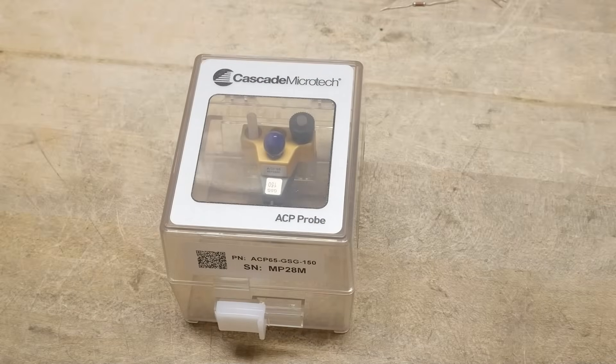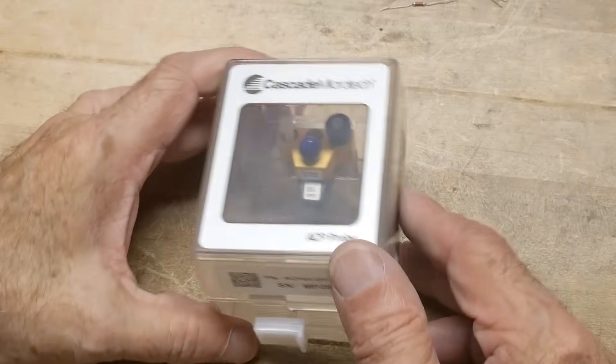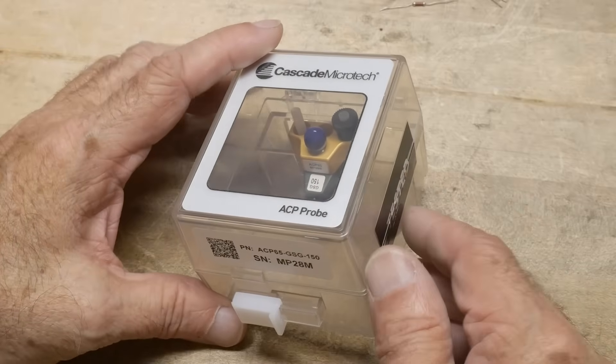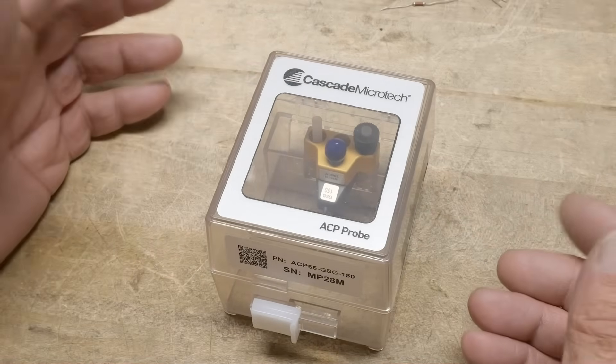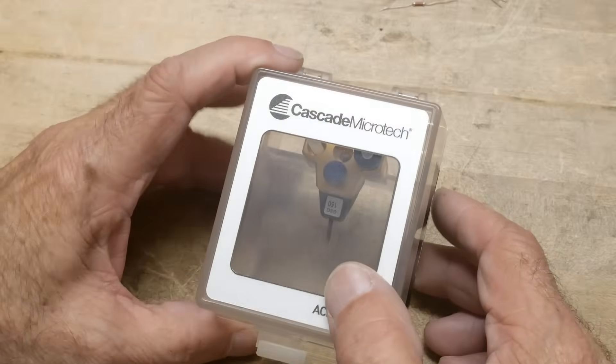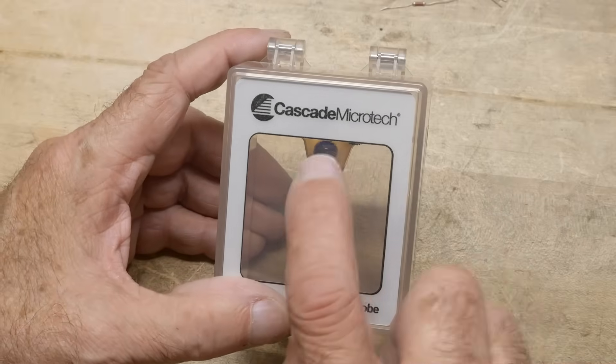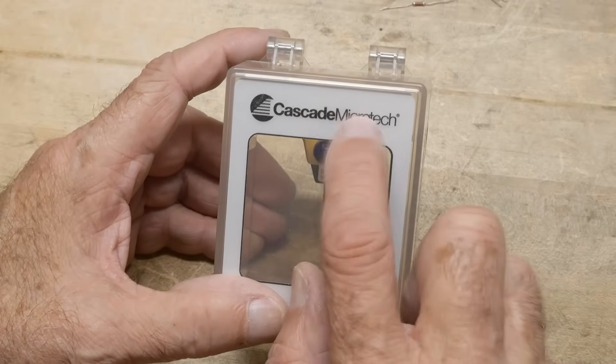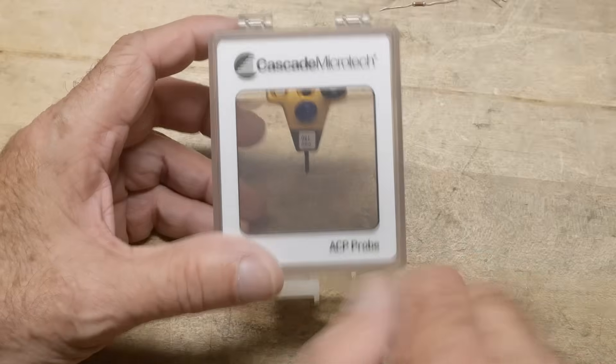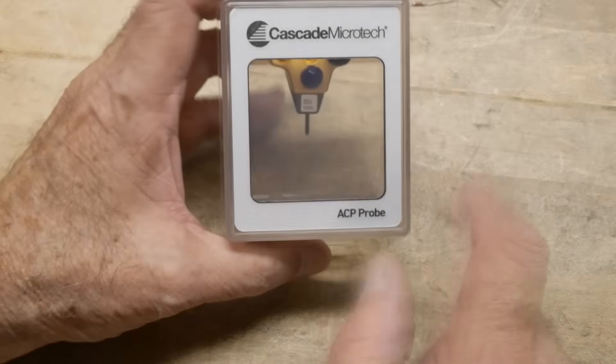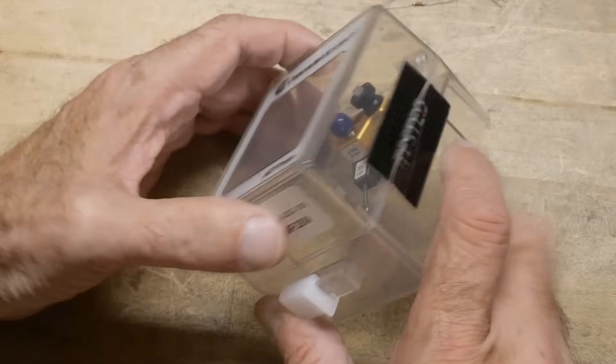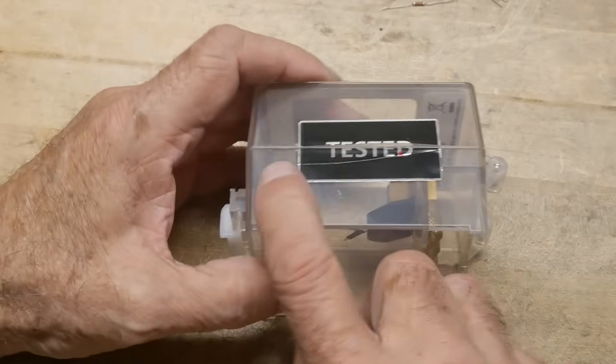Alright, what's on the bench? This is a special piece of test equipment if you're building semiconductor wafers. If you've ever been around a wafer fab, you must know what these things are. It's a Cascade Microtech, big name. This is a particular product of theirs, an ACP probe.